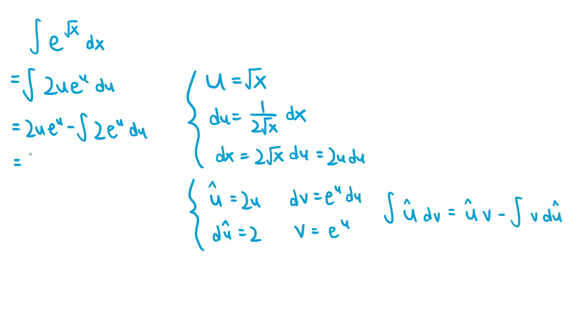so this expression becomes 2u e to the u, minus 2e to the u, plus some constant c.